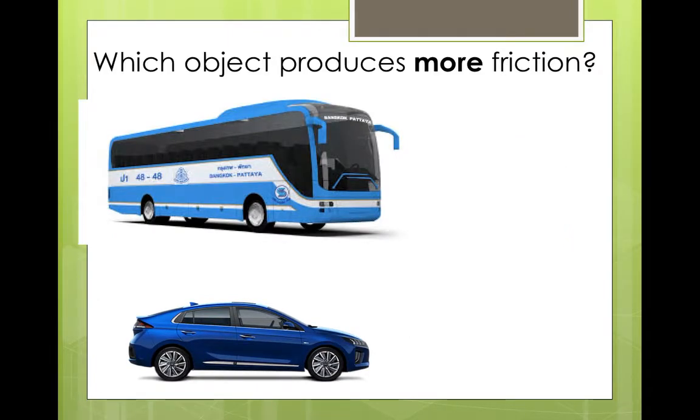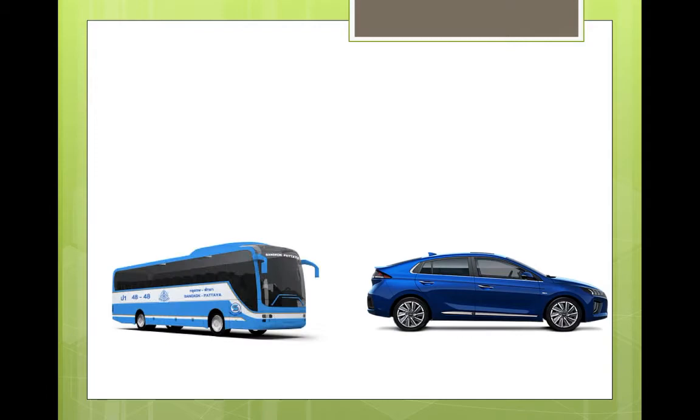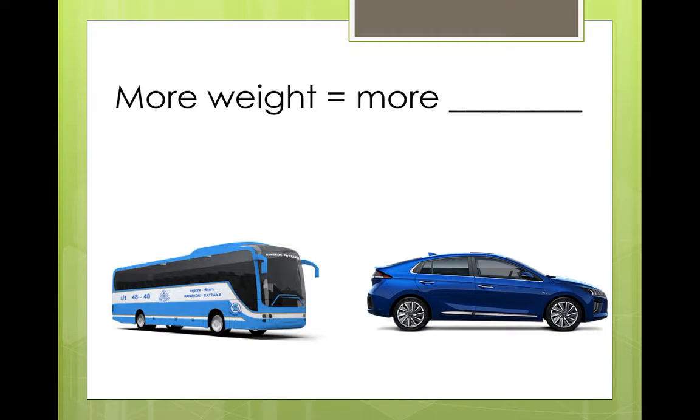So, which object produces more friction? The bus or the car? If you guessed the bus, then you were correct. Finally, what we know now is more weight equals more friction. Repeat after me. More weight equals more friction.